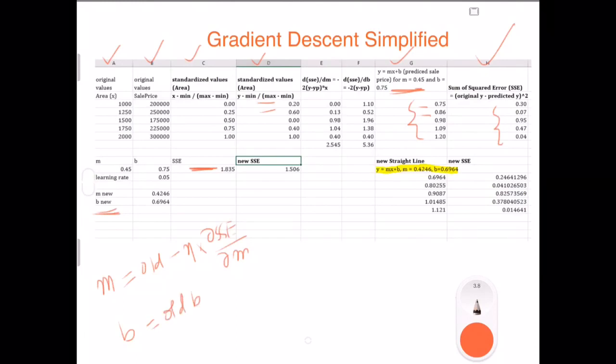Similarly for B, I'm keeping repeating this so it becomes very clear to you: the old value of B minus the learning rate times the derivative of the sum of squared error with respect to B. So I calculated E which is the derivative of the standard error with respect to M, and the F column is the derivative of standard error with respect to B.